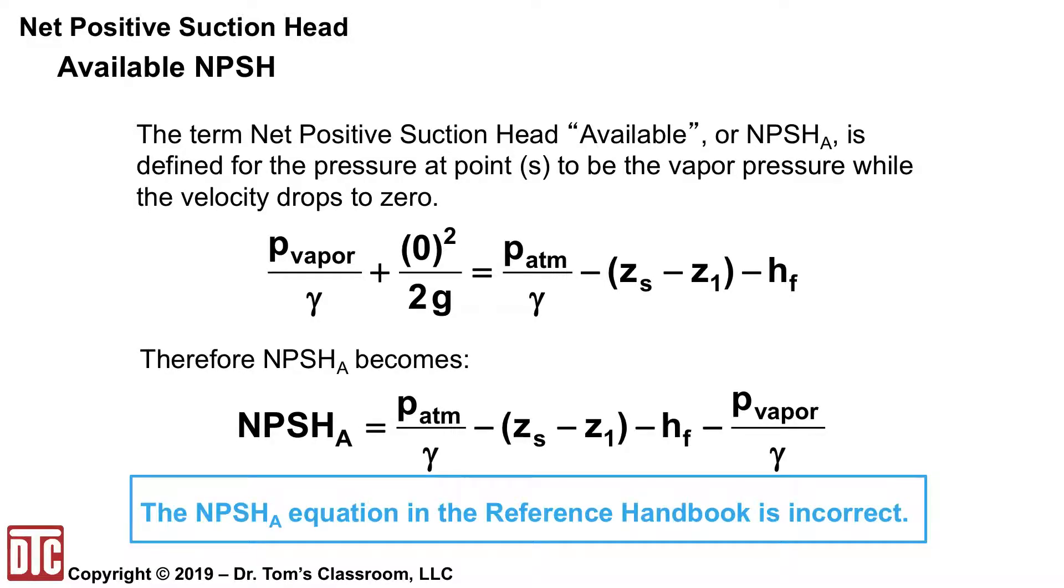So if you solve for or set that term to NPSH, that means you'll have the P atmosphere over gamma minus the ZS minus Z1 minus HF. And the P vapor over gamma goes to the right hand side as a negative.